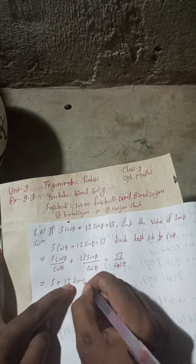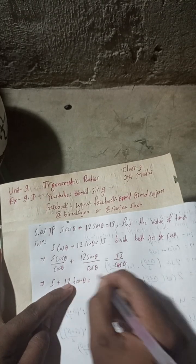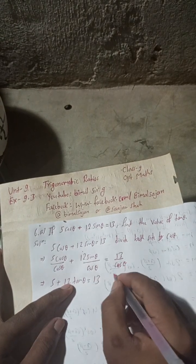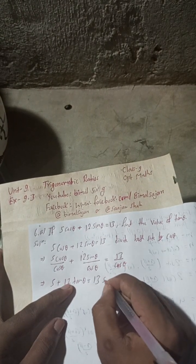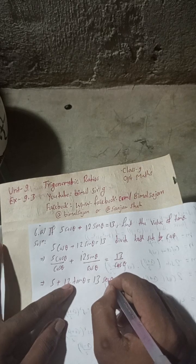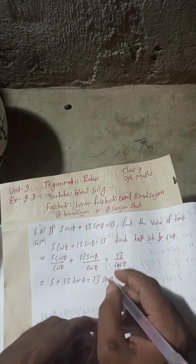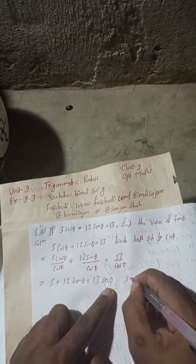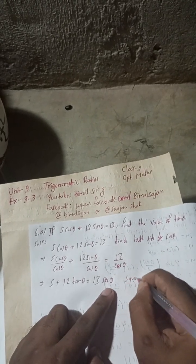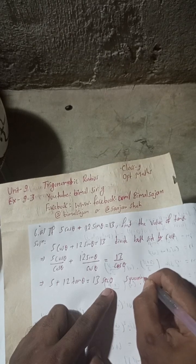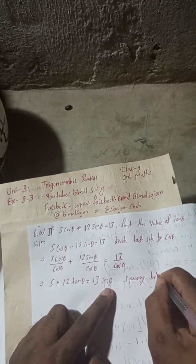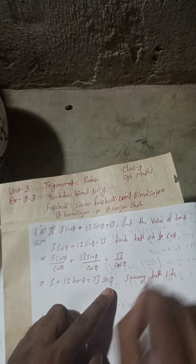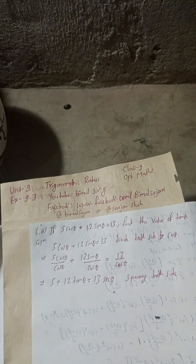So this gives us 12tanθ + 5 = 13/cosθ, which is 13secθ. Now squaring both sides of this equation.